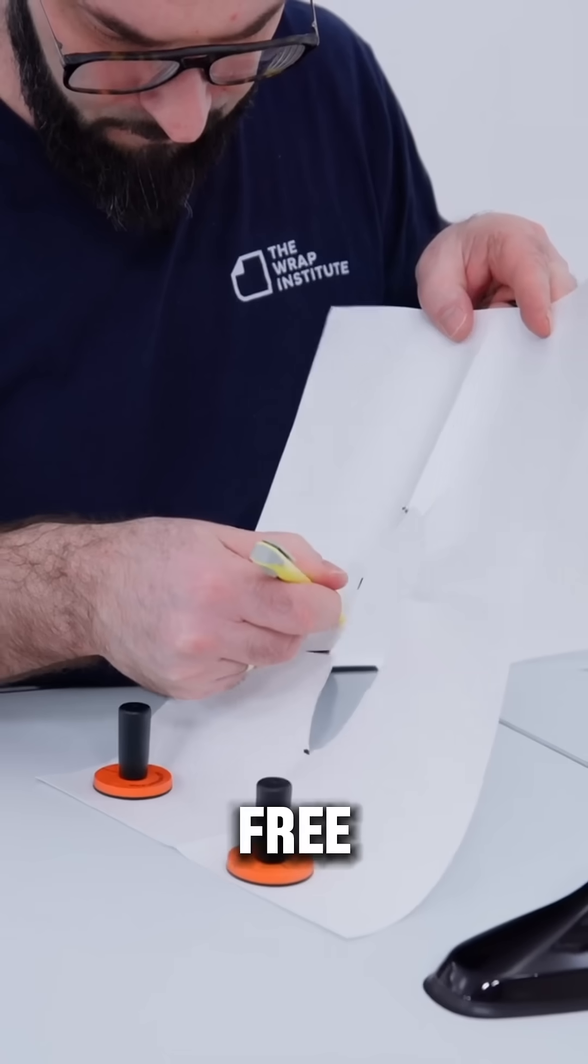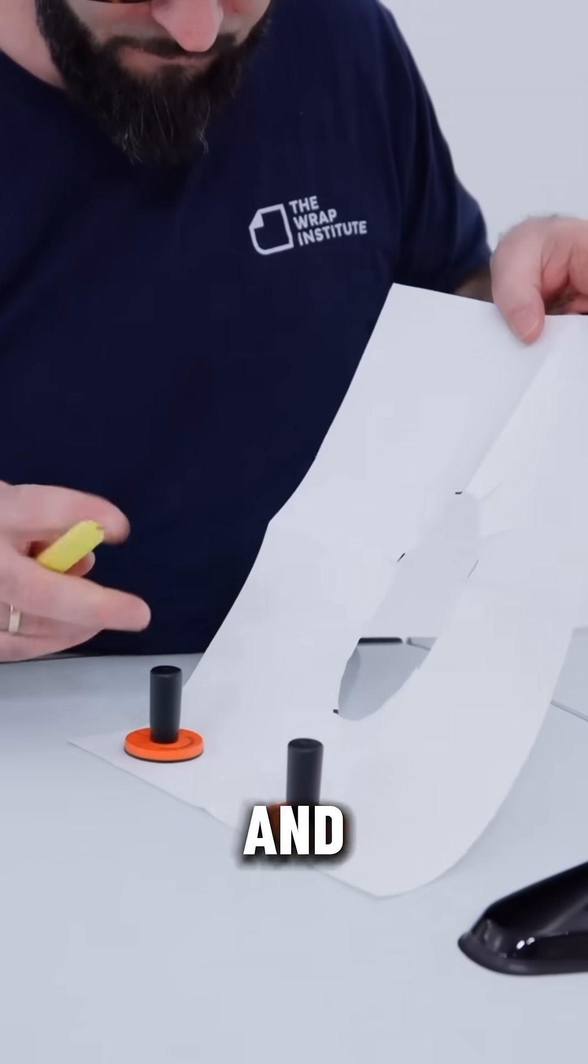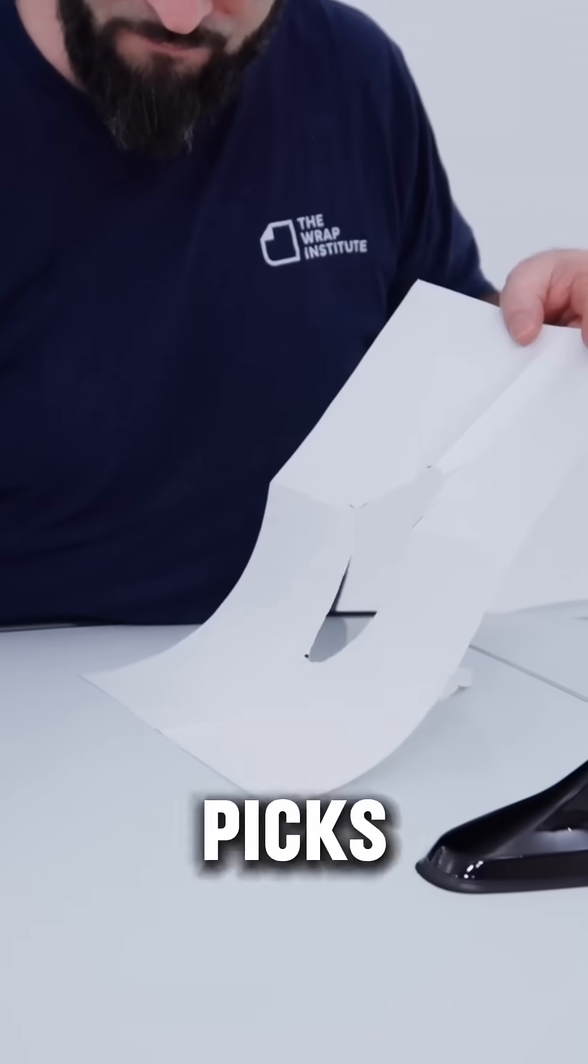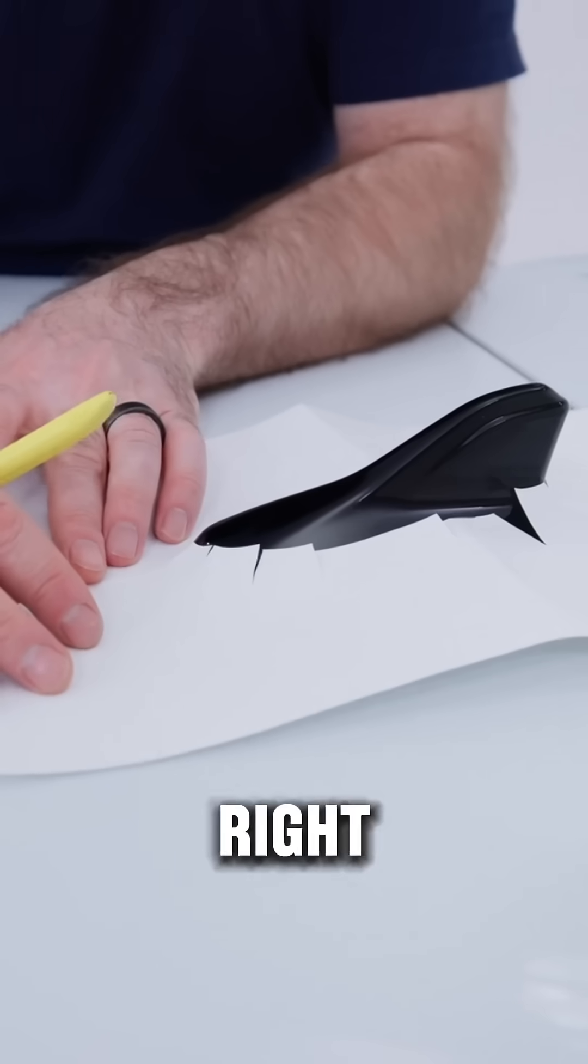So again, short shallow blade, free hand holding it off the surface so there's no chance of cutting the roof. And once he makes those relief cuts, he picks the magnets off the liner, places the liner around the antenna right now.